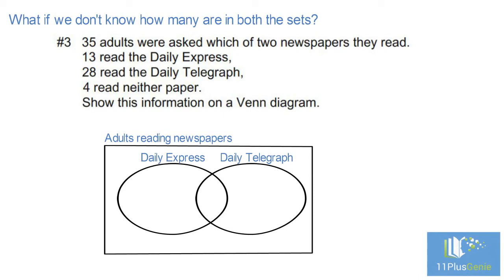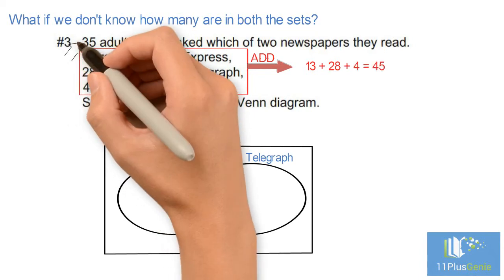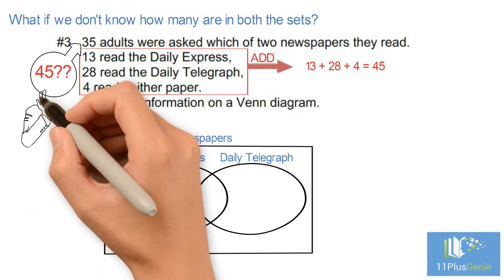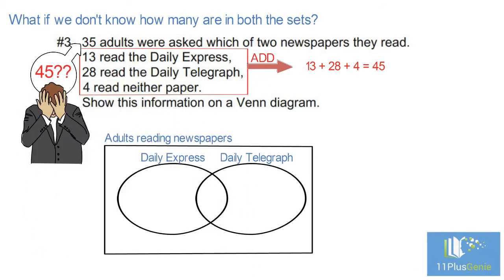To be able to draw a Venn diagram we need to know how many people read both papers. In this case we add the given numbers: 13 add 28 add 4 equals 45. But the question said that 35 adults were asked. The extra people are the ones that we counted double. They are the ones that read both papers.